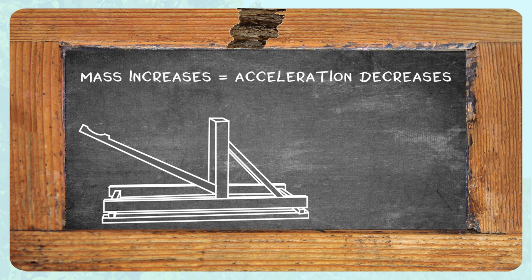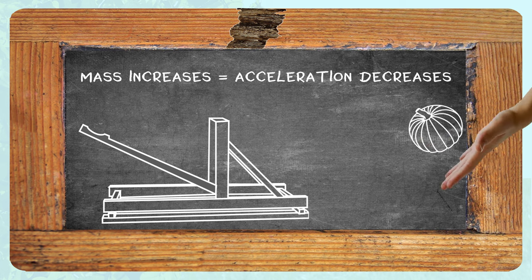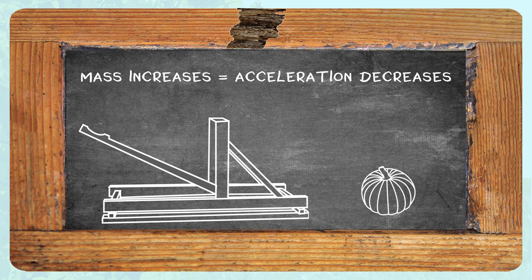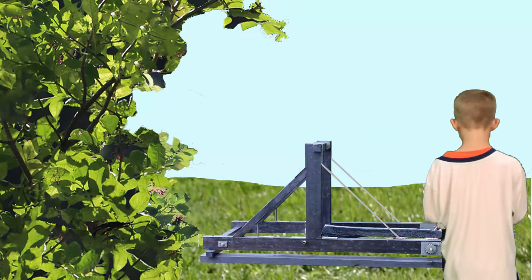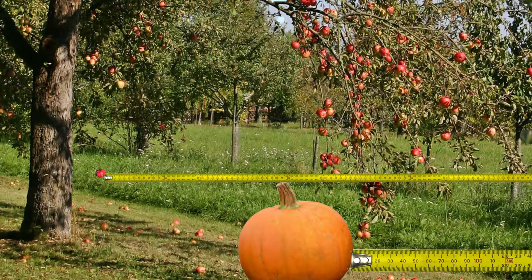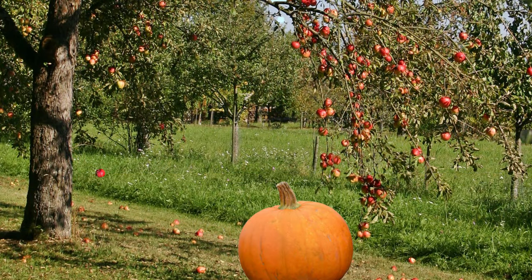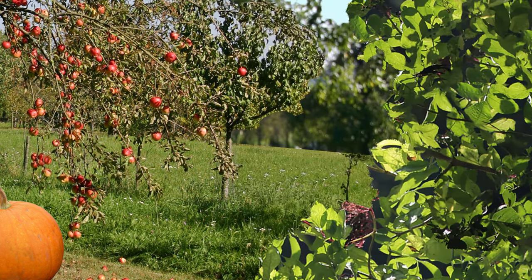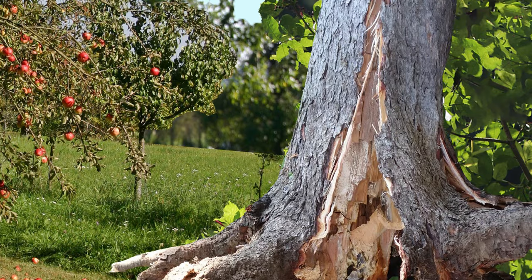The other part of Newton's Second Law — as the object's mass increases, its acceleration decreases — can be demonstrated in the same way. Using the same catapult, your brother can send a giant pumpkin flying a much shorter distance than a tiny apple. The pumpkin has a greater mass, so the acceleration is smaller. The catapult could send an apple tree even less far. The larger the mass, the smaller the acceleration.